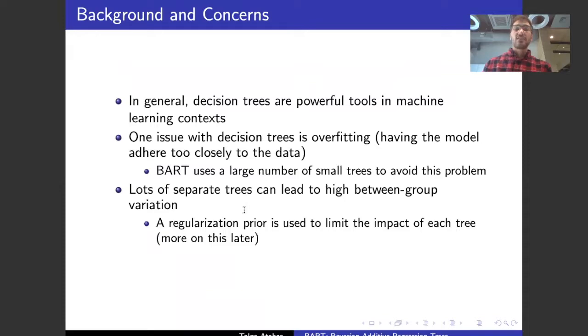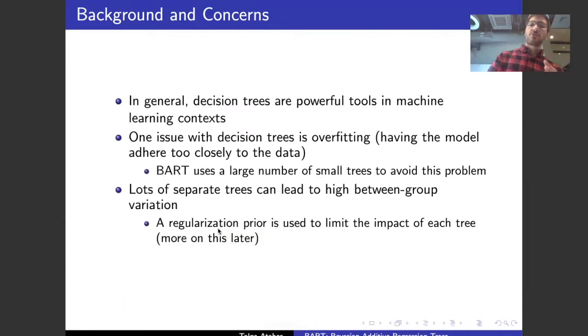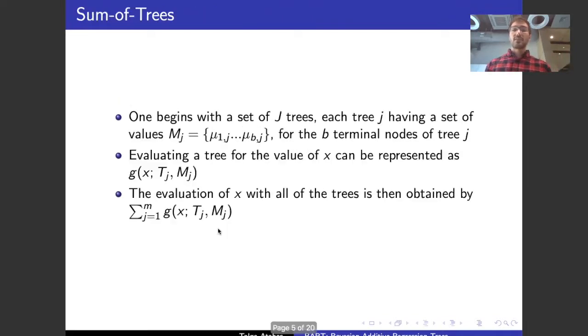In general, the decision trees are powerful tools in machine learning, so we're just adapting this to a Bayesian framework, and one issue with decision trees is overfitting, possibly, so having the model adhere too closely to the data. We can see that if this tree is very long, then it's going to be like x is less than 80, x is less than 90, x is less than 100, and it just gets very, very small in what it measures. Therefore keeping the trees small is a goal of this algorithm, but then having a lot of separate trees can lead to hide between group variations, so a regularization prior is used to limit the impact of each tree.